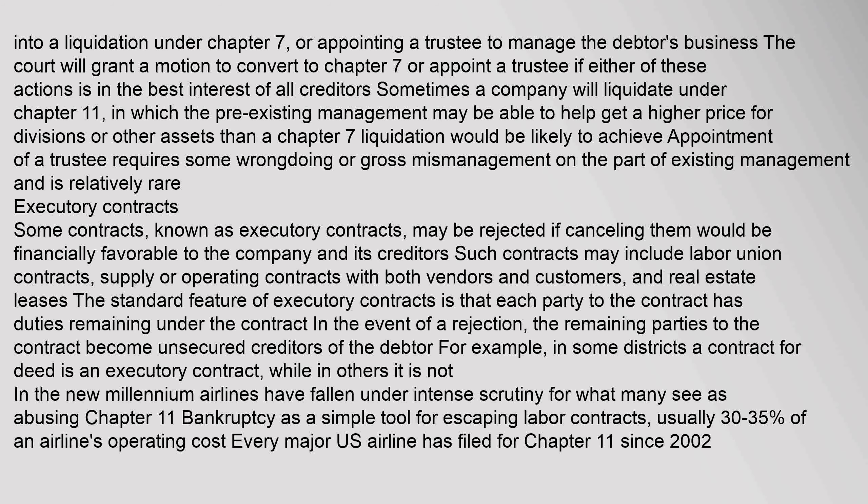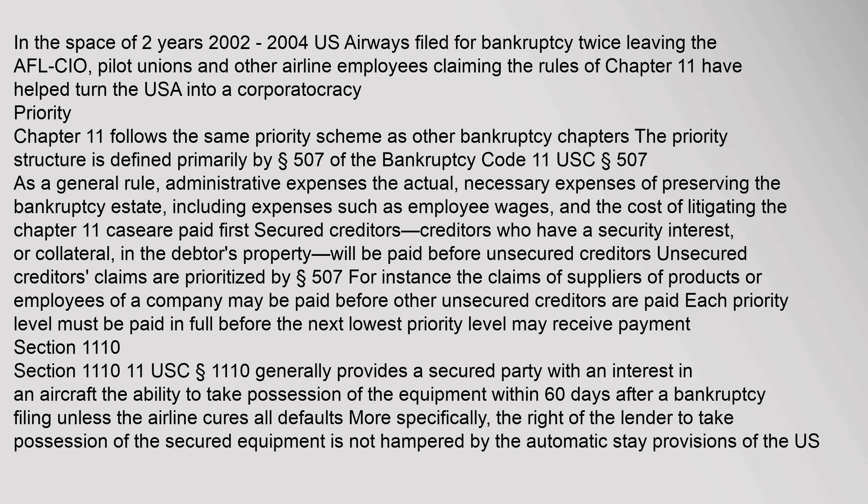In the new millennium, airlines have fallen under intense scrutiny for what many see as abusing Chapter 11 bankruptcy as a simple tool for escaping labor contracts, usually 30–35% of an airline's operating cost. Every major US airline has filed for Chapter 11 since 2002. In the space of two years, 2002–2004, US Airways filed for bankruptcy twice, leaving the AFL-CIO, pilot unions and other airline employees claiming the rules of Chapter 11 have helped turn the USA into a cooperatocracy.